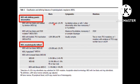MDS with low blast has a blast percentage less than 5% in the marrow and less than 2% in the peripheral blood. To call it increased blast, you need more than 5% and up to 19% blasts in the marrow. MDS with increased blast replaced the former term MDS with excess blast, and it also includes MDS with fibrosis along with IB1 and IB2 subcategories.